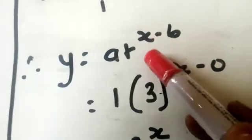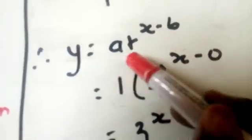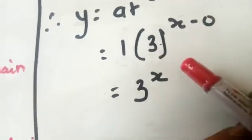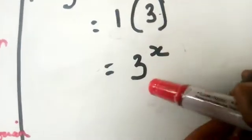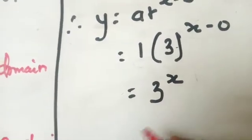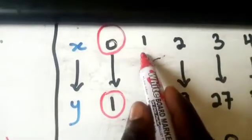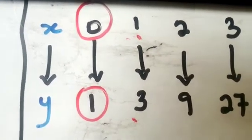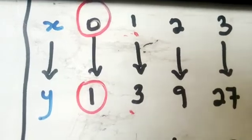From this example: a equals 1 (the first partner), B equals 0 (the first lady), and r equals 3 (since 3 over 1 gives us 3). We substitute into the formula y = a·r^(X−B), giving us y = 1 × 3^(X−0), which simplifies to y = 3^X.